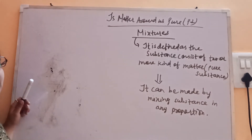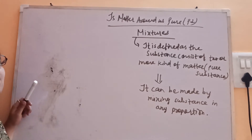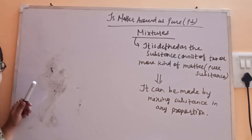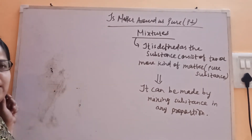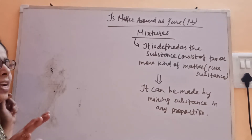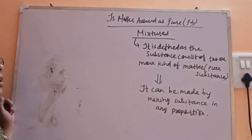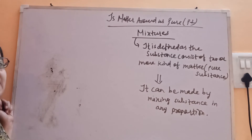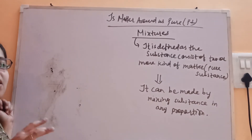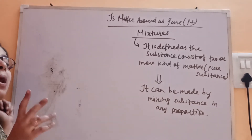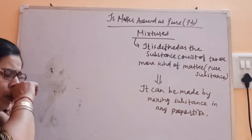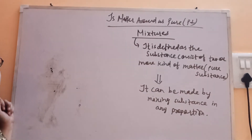You can take solid and mix into liquid, take liquid and mix into gas, take gas and mix into another gas — in any proportion it is not fixed. However, compounds, which we saw under pure substances, can only be made in a fixed proportion. That is why their composition is fixed by mass; otherwise compound formation is not possible.